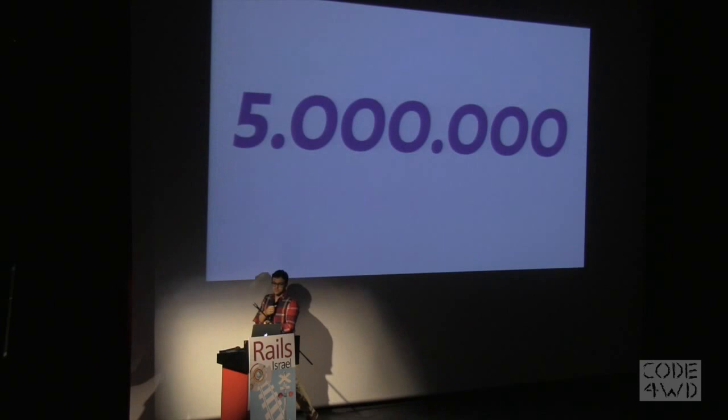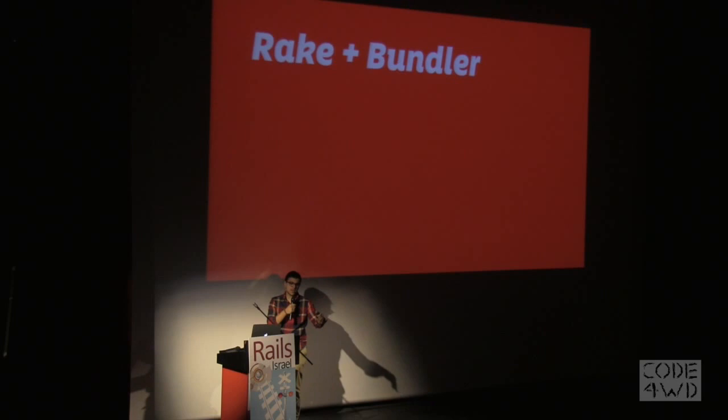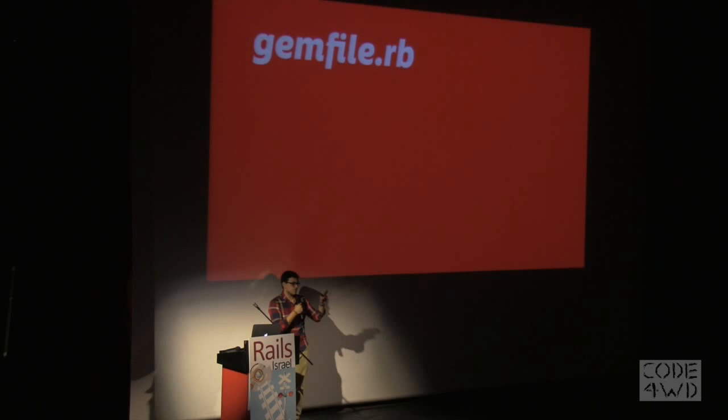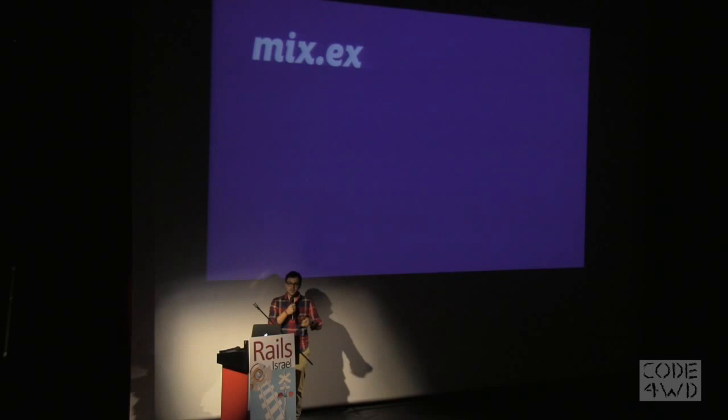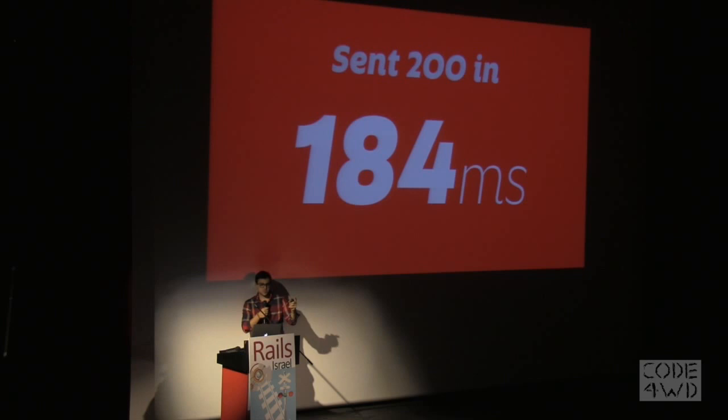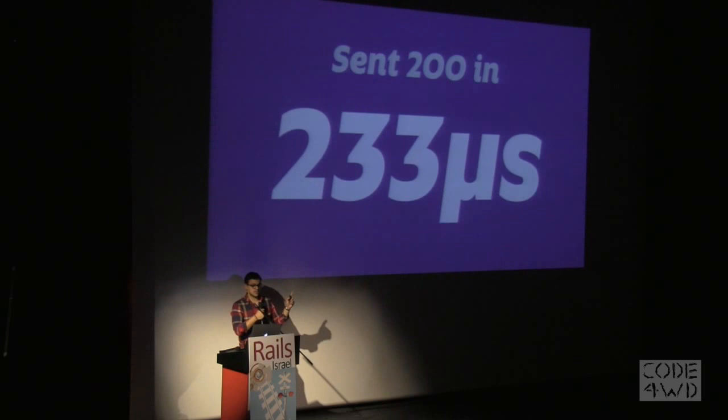There's a bunch of things you can relate to: Rake and Bundler — if you like Rails and Ruby — you can use Mix, which is the same thing in Elixir. For dependency management, you have Hex. As an example, I built the fastest Rails application I could. The response time I got was 184 milliseconds, and the response time I got in Elixir was 233 microseconds.